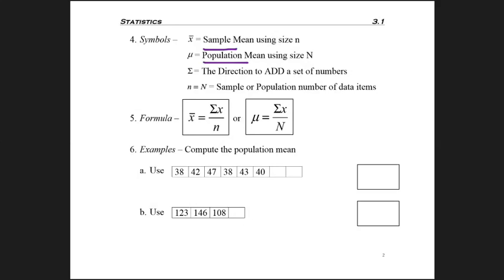So the first thing that we want to look at is called a sample mean, and we use this symbol right here, which is called X bar, because it has a bar on top. And this is when you use sample size n, which I'll talk about more in a minute.